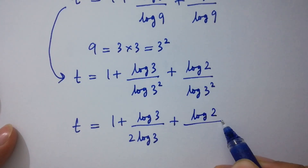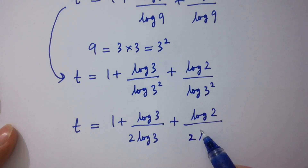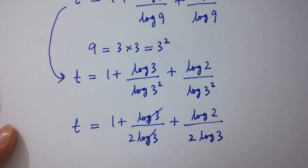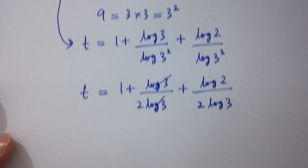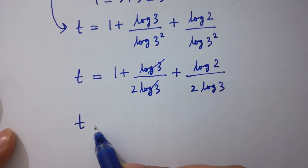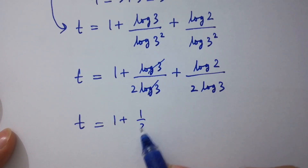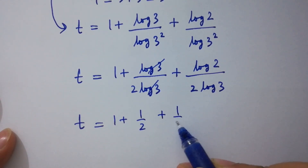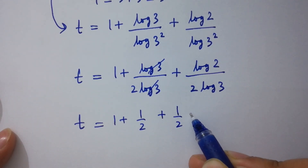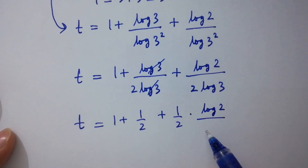Plus log 2 over 2 log 3. Log 3 and log 3 cancel, so t equals 1 plus one half plus one half times log 2 over log 3.